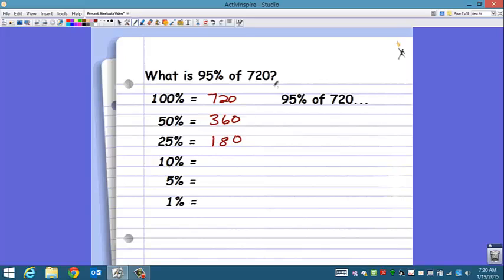10%, use a little trick, move the decimal one place to the left, and we get 72. 5% would be half of the 10%, half of the 72, 36. And 1%, move the decimal two places to the left, and you would get 7 and 2 tenths.